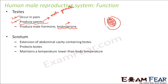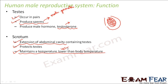Next is scrotum. It is an extension of the abdominal cavity which contains the testis. It maintains a temperature lower than the body temperature, because this is the appropriate temperature required for the production of sperm — at body temperature, sperms cannot be produced. It also protects the testis, because the testis are doing the most important job of producing the male sex cells. If male gametes are not produced, reproduction cannot take place.